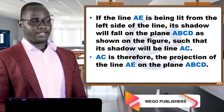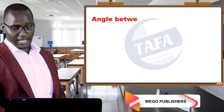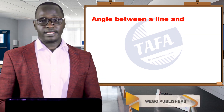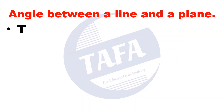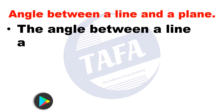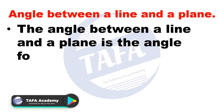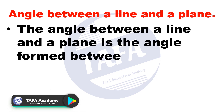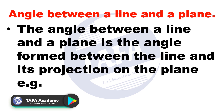The angle between a line and a plane is the angle formed between the line and its projection on the plane.